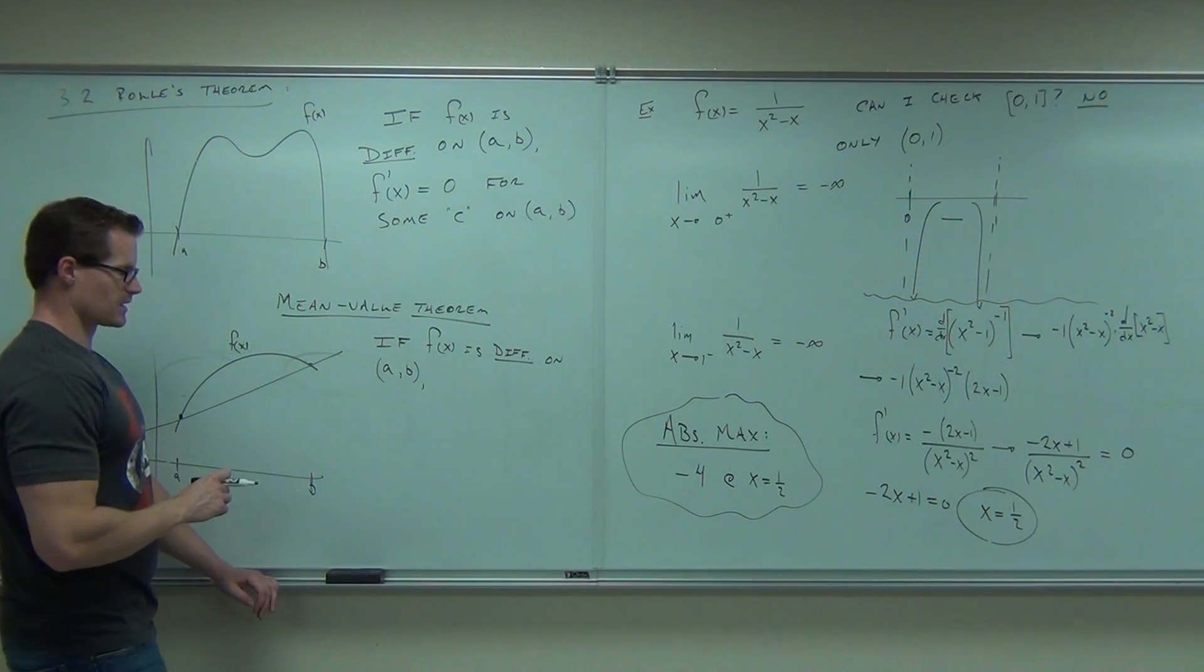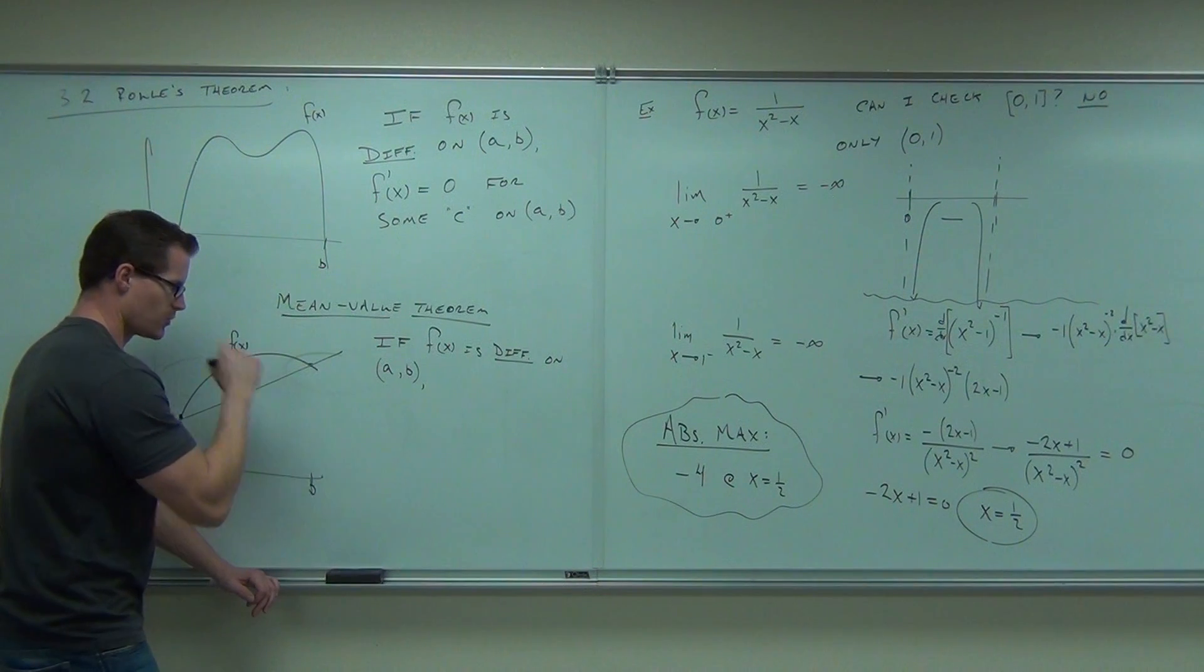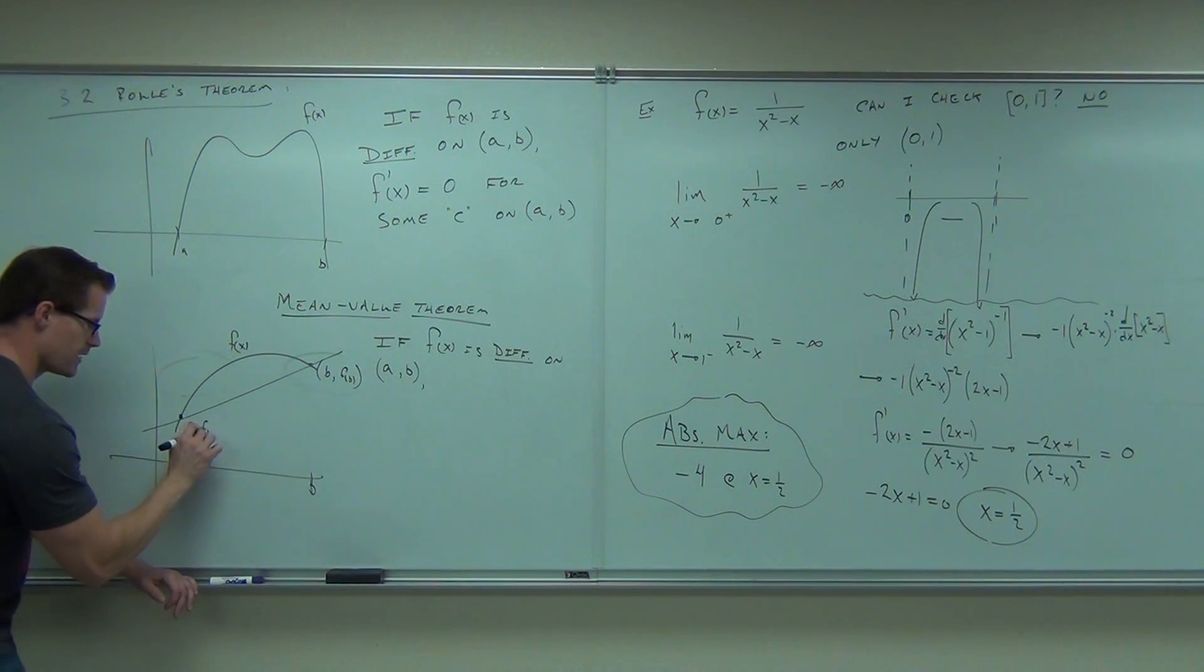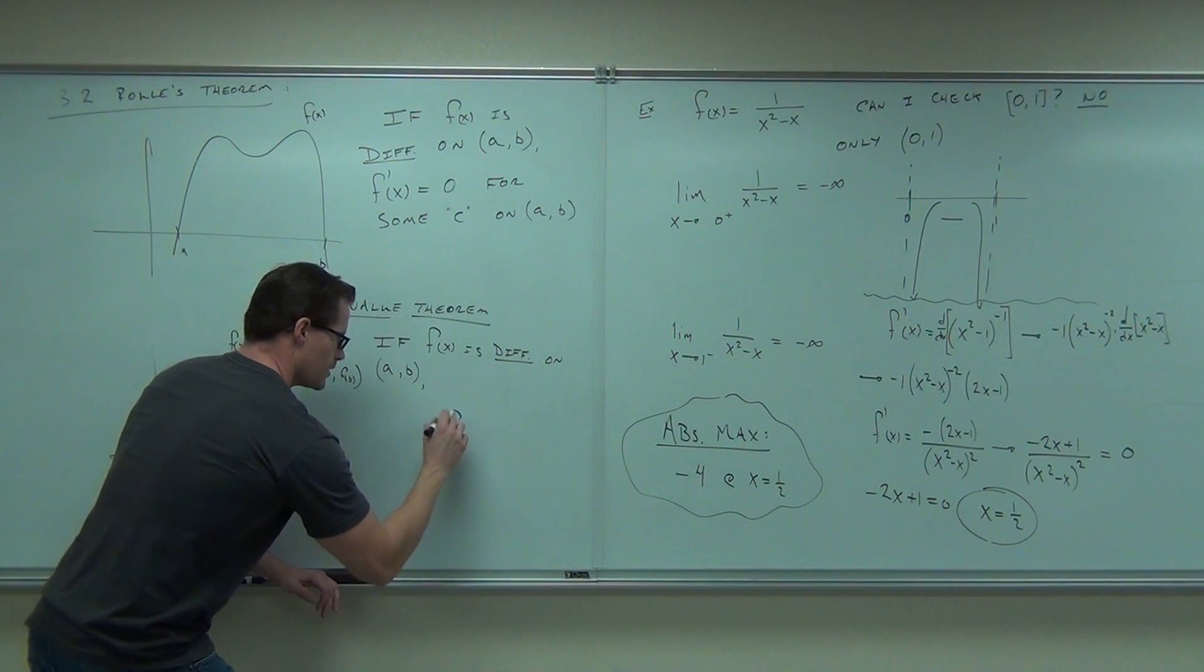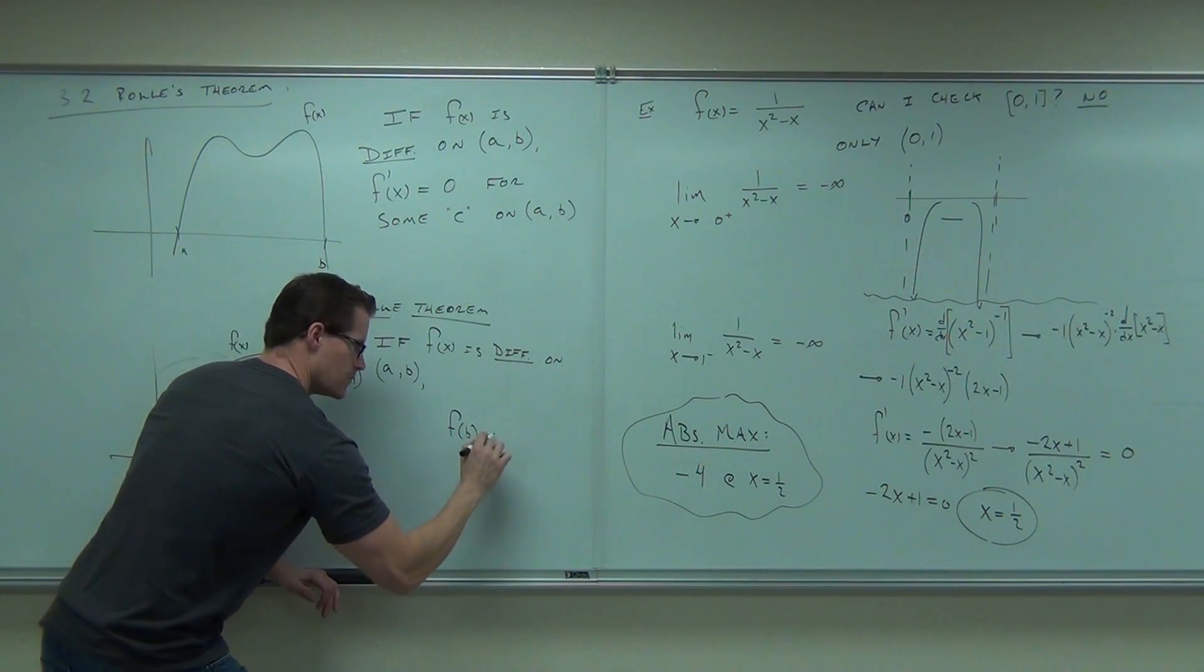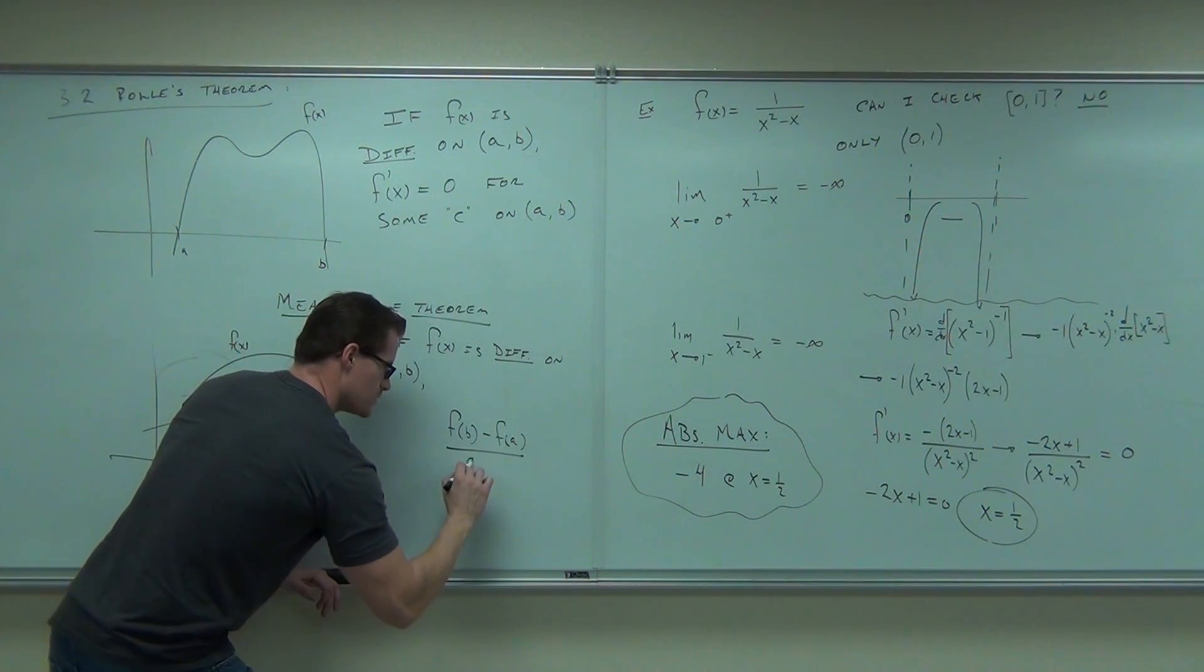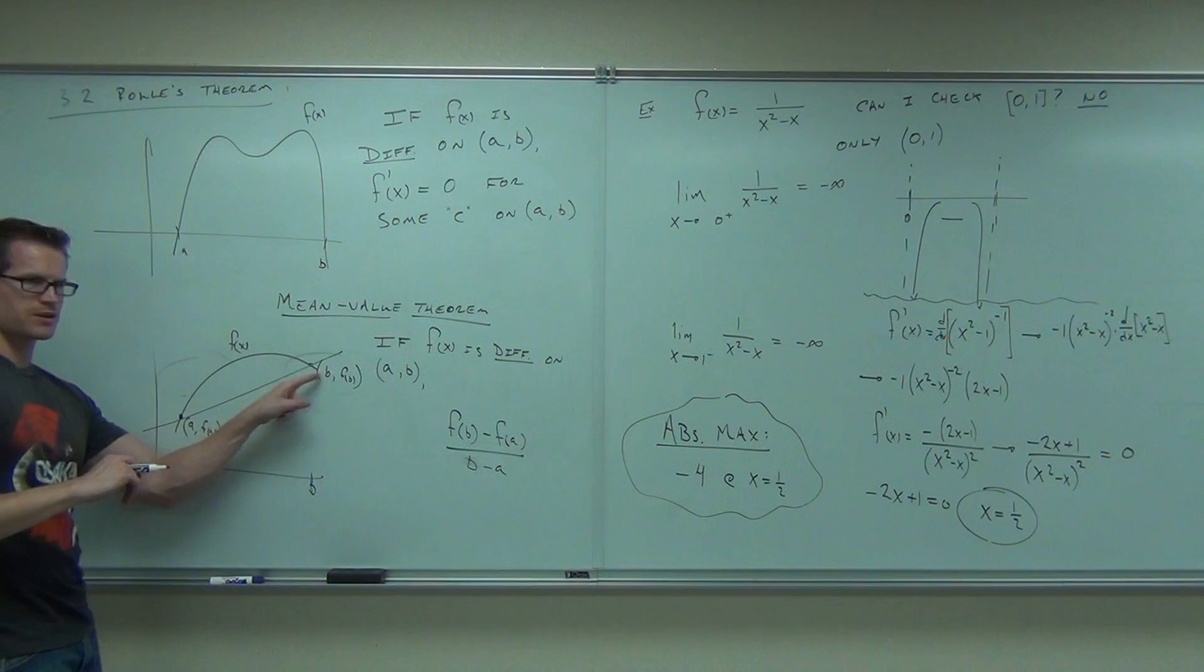Oh, you know what? This takes a little bit more work to write it simply. But would you understand that the slope of this would be b, f of b. Well, the point is b, f of b. And the point is a, f of a. Then the slope is y2 minus y1 over x2 minus x1. Are you okay with that, that that is actually the slope? y2 minus y1 over x2 minus x1?